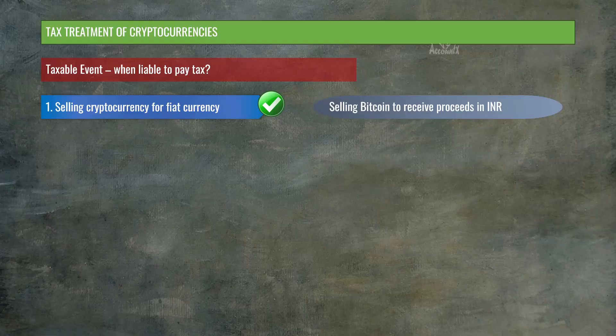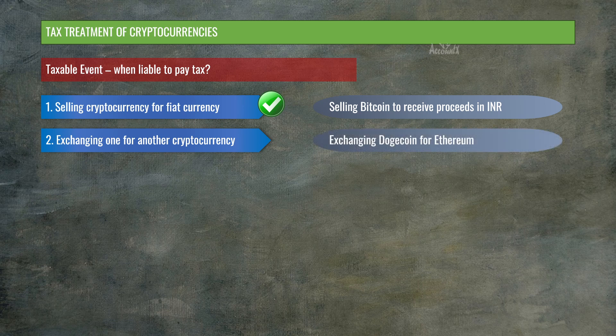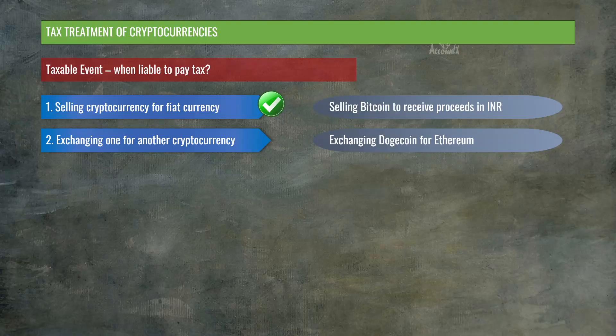This is how tax is computed when you sell cryptocurrencies. For taxable events 2 and 3, the tax computation is very similar. For event 2 — exchanging one cryptocurrency for another, say dogecoin for Ethereum — the value of Ethereum received would be your sale consideration. From this, you reduce the cost of acquisition of dogecoin, and if you have a gain, you are required to pay tax at 30%.